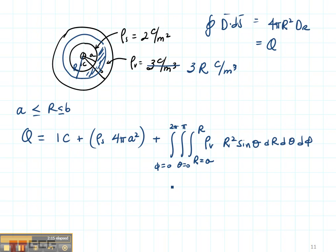As I do my integral, I'm going to have ρ_v, which in this case is 3R. That's going to get combined with my R² here, so that when I do the dR integration, I'm going to have a 3 from my ρ_v, and it's going to be R to the 4th over 4 from A to R.